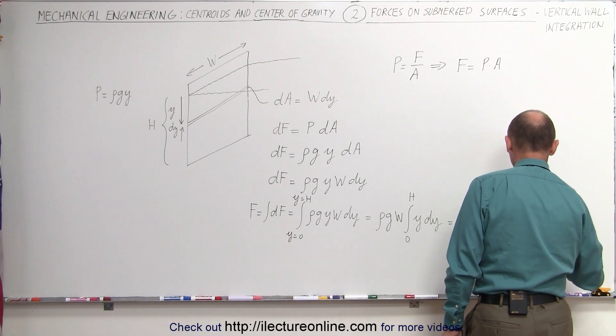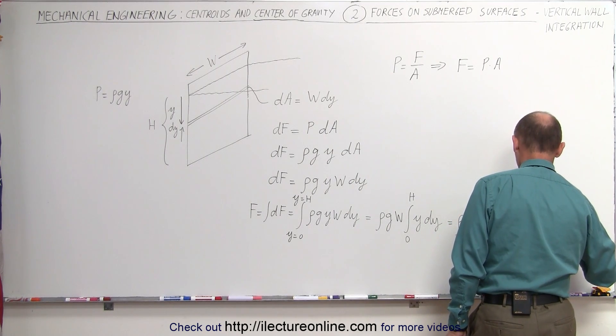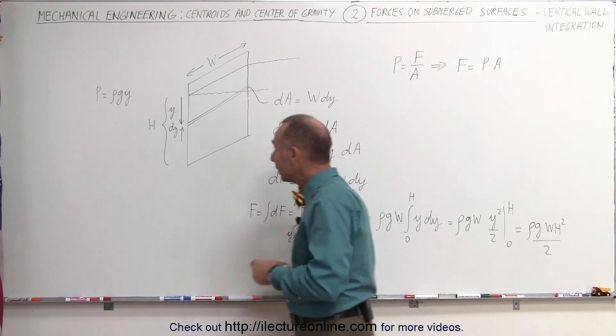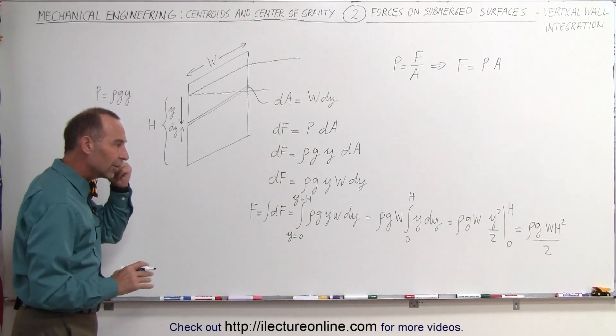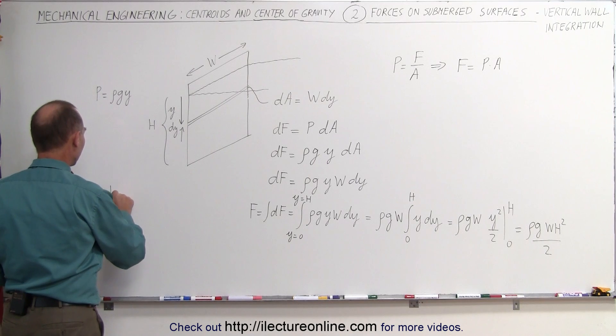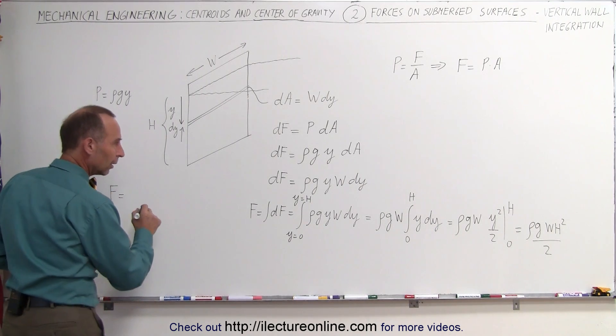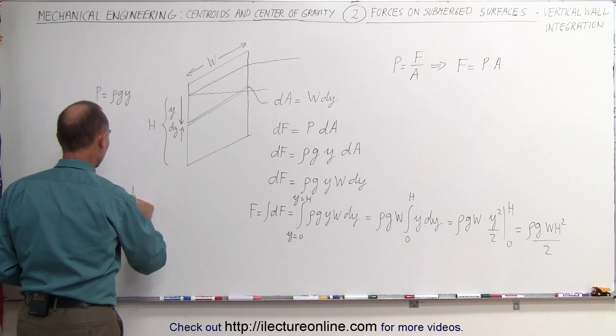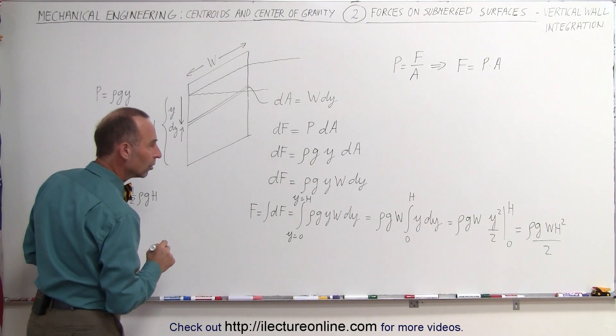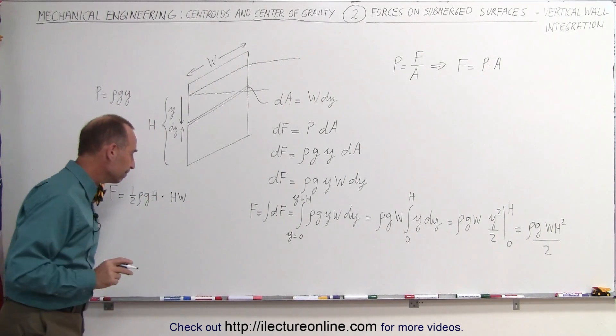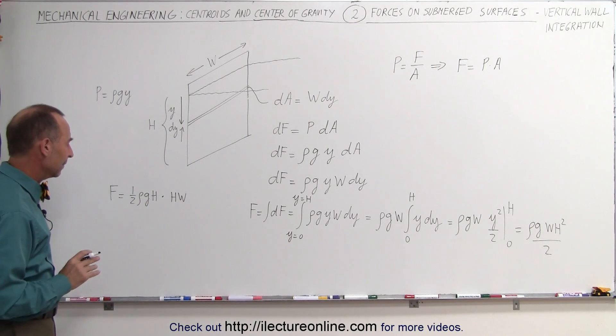This is equal to ρ, g, w, h squared, divided by 2. Now if we write that a little bit differently, I'm going to write things a little bit different. I can say that the force on the whole wall is equal to one-half ρ, g, h, times h times w. Hmm, why did I write it like that?